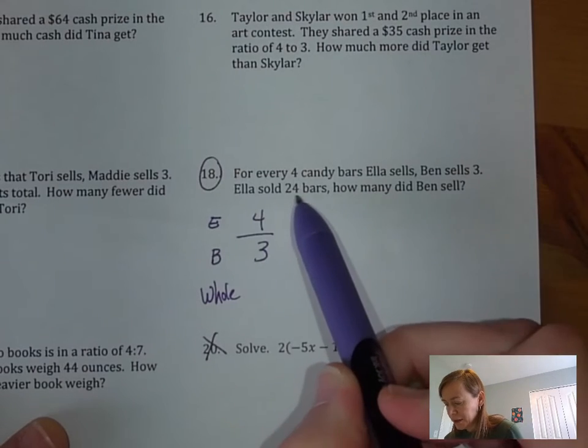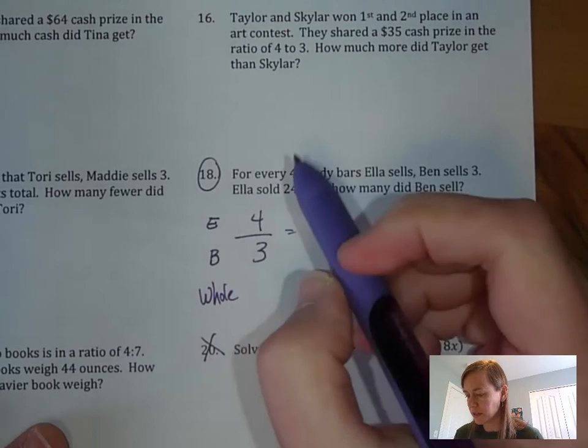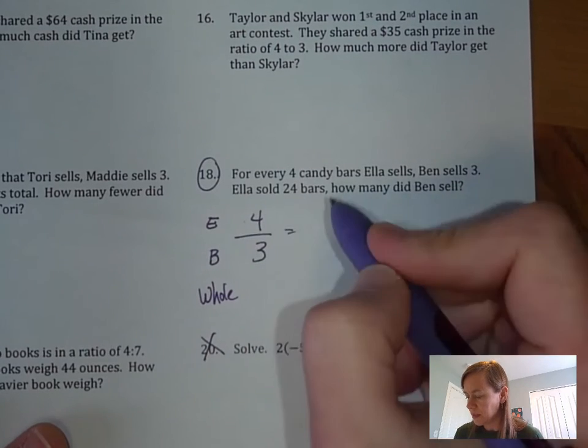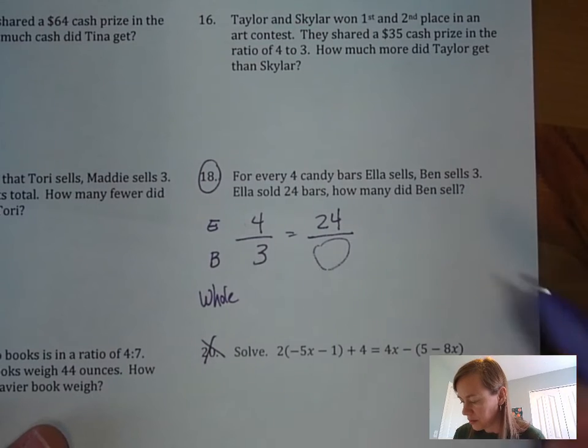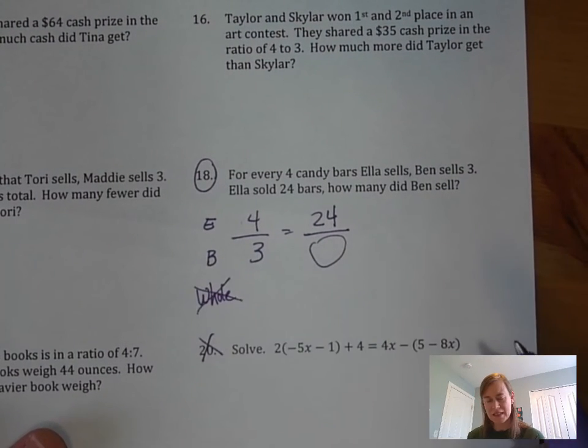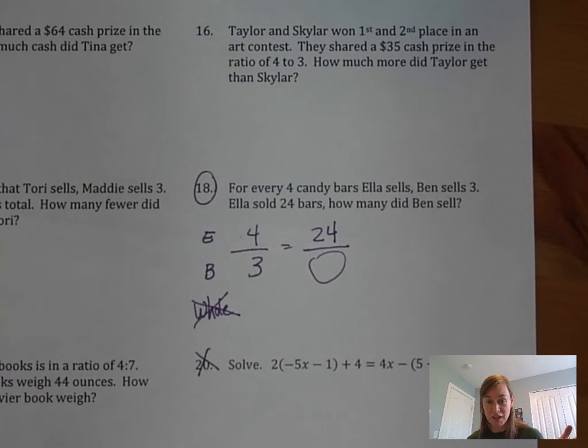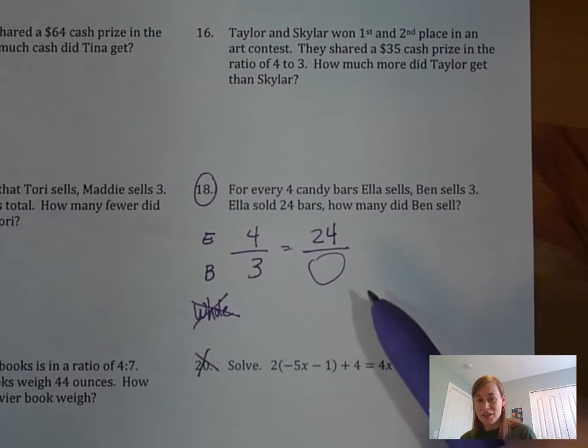Ella sold 24 bars. How many did Ben sell? Over here on the other side of the proportion, Ella's number is going to be 24, so we're going to put that there, and then we don't know what goes here. Actually we're not going to need the whole in this case. You could find it out for fun if you want, but do you need it to figure out this number? No.